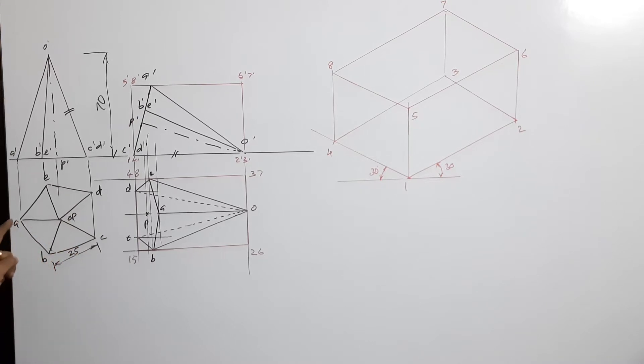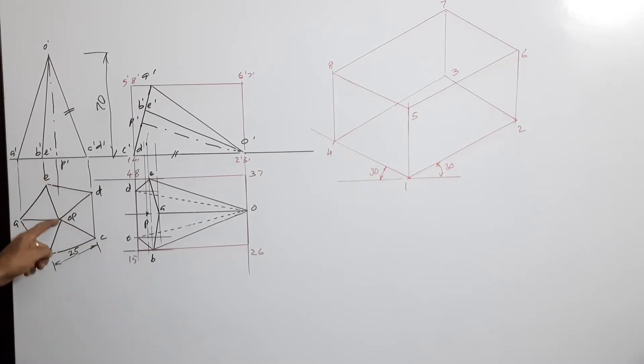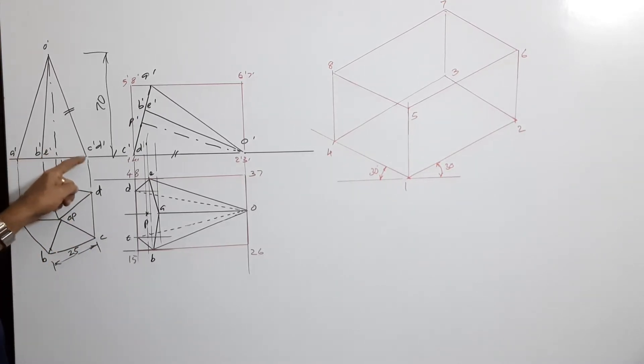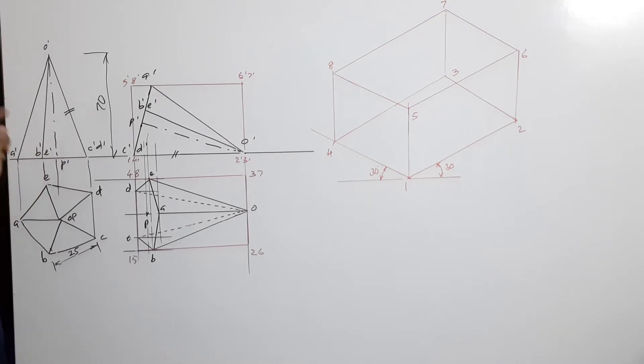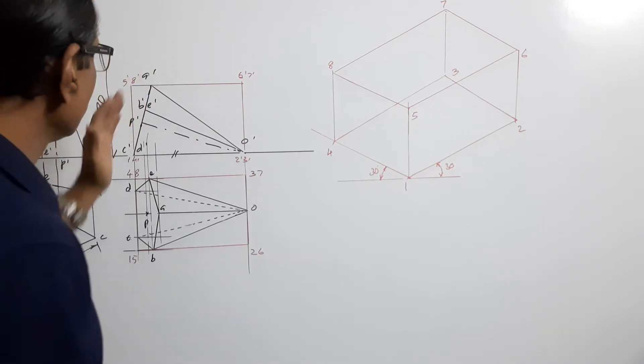Mark the points a, b, c, d, e, o, p and their dashed counterparts a dash, b dash, c dash, d dash, e dash, o dash, p dash. Then I tilt the pyramid.